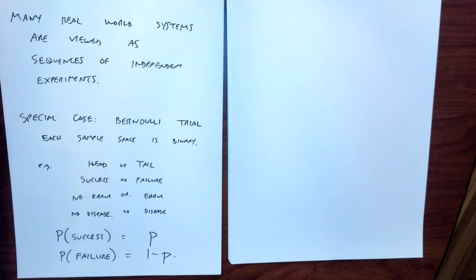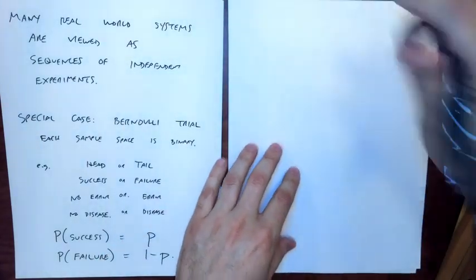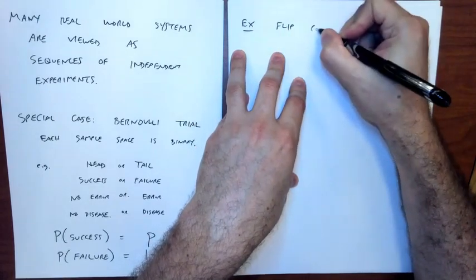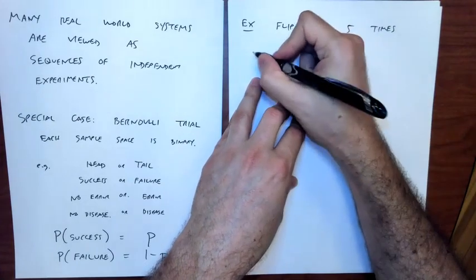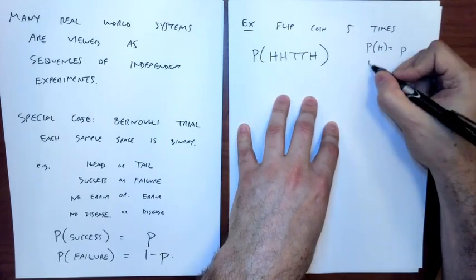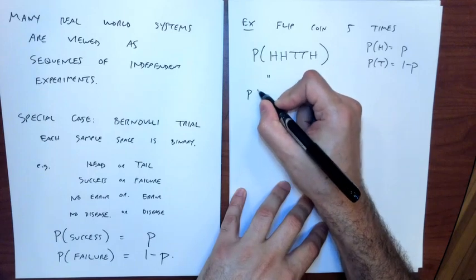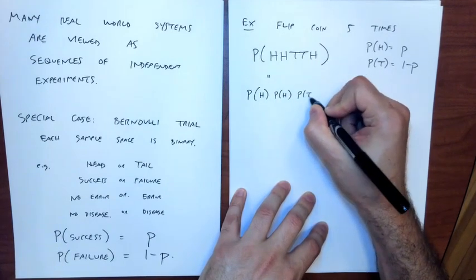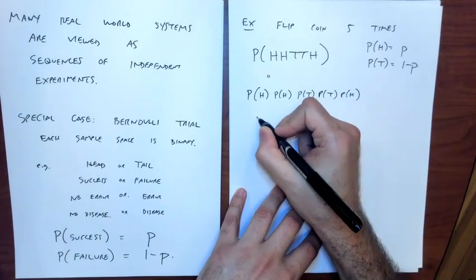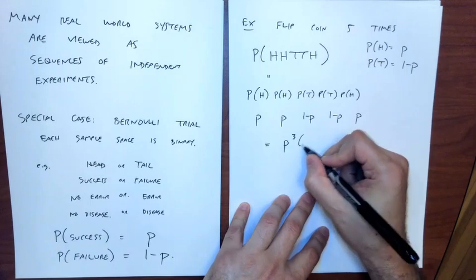This is very much like continuing to flip a coin. For example, if I flip a coin five times, what's the probability of the sequence head, head, tail, tail, head? The probability of head is P and the probability of tail is 1 minus P, allowing for an unfair coin. Since each flip is independent, I can decompose this into the product of the individual probabilities. So the answer is P cubed times (1 minus P) squared.